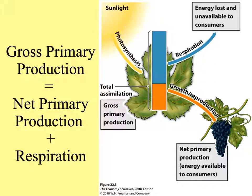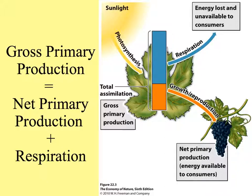Gross productivity or primary production is the sum of net primary productivity and respiration. The leaf takes energy from the sun and fixes it by photosynthesis — that total assimilation is gross primary production. The part that goes to new biomass, like making new shoots, leaves, flowers, and fruits, is net primary production, while a lot of it is used in respiration just for living.